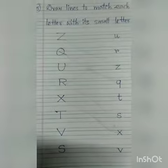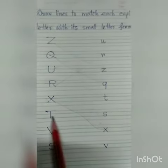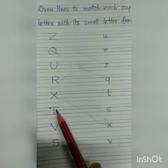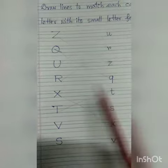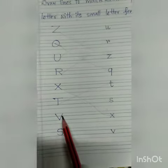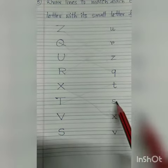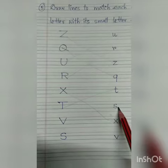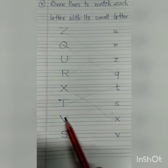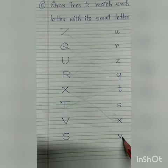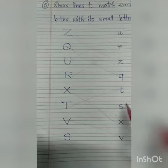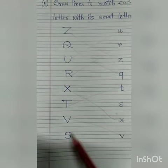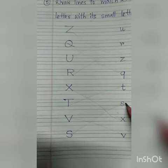T — this is capital letter T and this is small letter T. You have to match it. V — this is capital letter V. This is small letter S and this is small letter V. You have to match it like this. And the last one is S — this is capital letter S and this is small letter S. You have to match it like this.